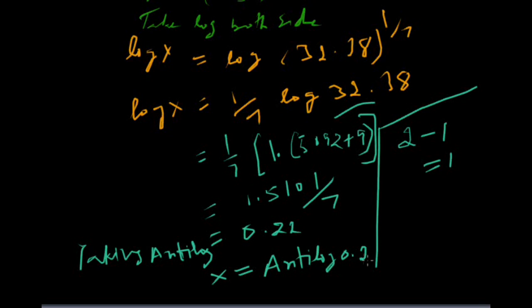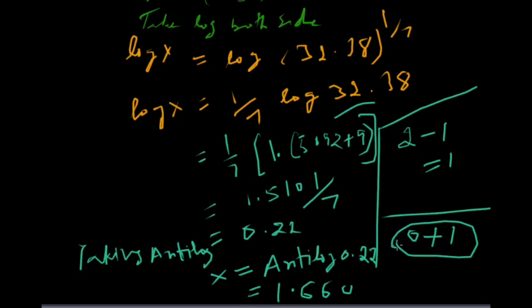For antilog 0.22, since 0 is before the decimal point, we add 1 to get the characteristic 1. Looking at the antilog table for 0.22, we get 1.660. This is the value of x. Thank you very much.